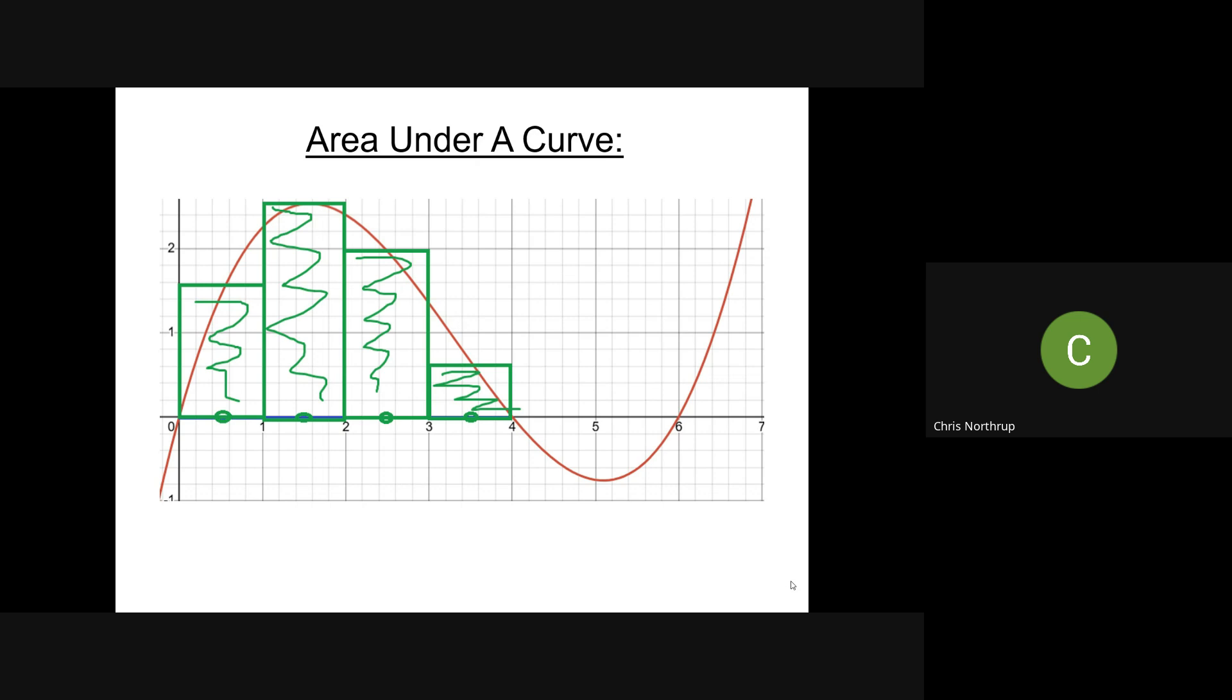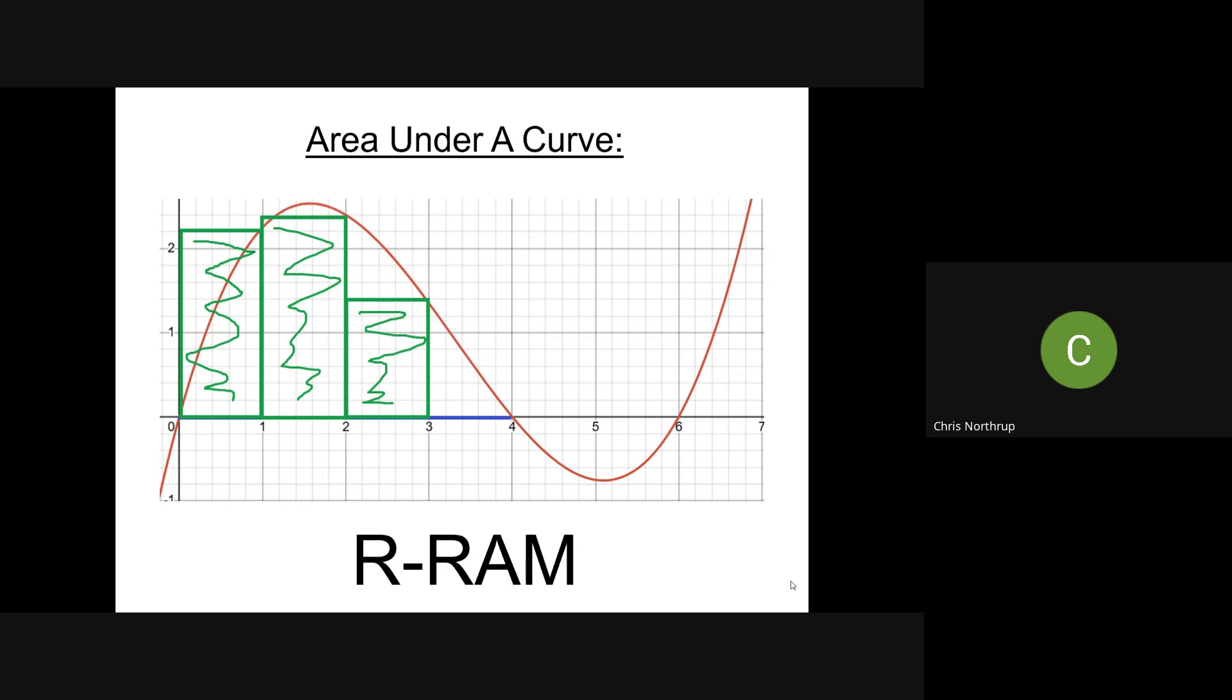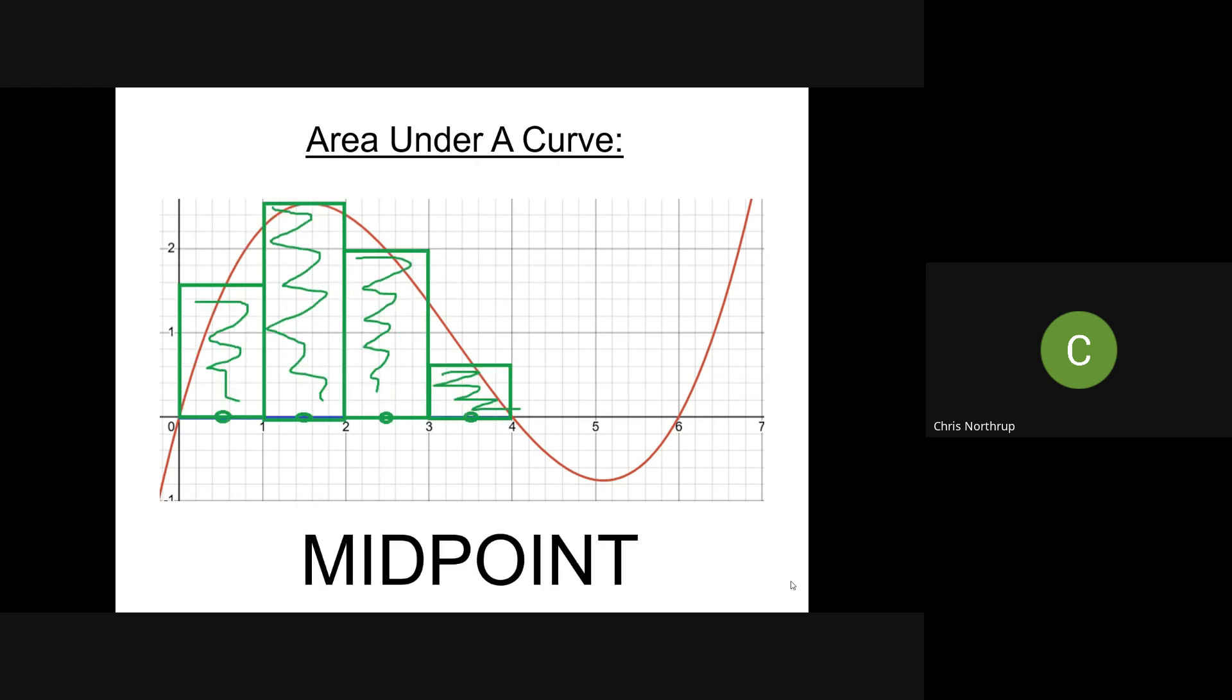So these three things have names. That first one is LRAM, which stands for Left Riemann Approximation Method. The second one was RRAM, which is the Right Riemann Sum Approximation Method. And then the last one is called the Midpoint Method, and we'll do some practice in class how we can get these things.